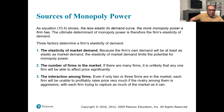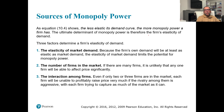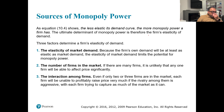What are the sources of monopoly power? The less elastic its demand curve, the more monopoly power a firm has. The ultimate determinant of monopoly power is therefore the firm's elasticity of demand. Three factors determine a firm's elasticity of demand: first, the elasticity of market demand, because the firm's own demand will be at least as elastic as market demand, so market demand elasticity limits the potential for monopoly power.